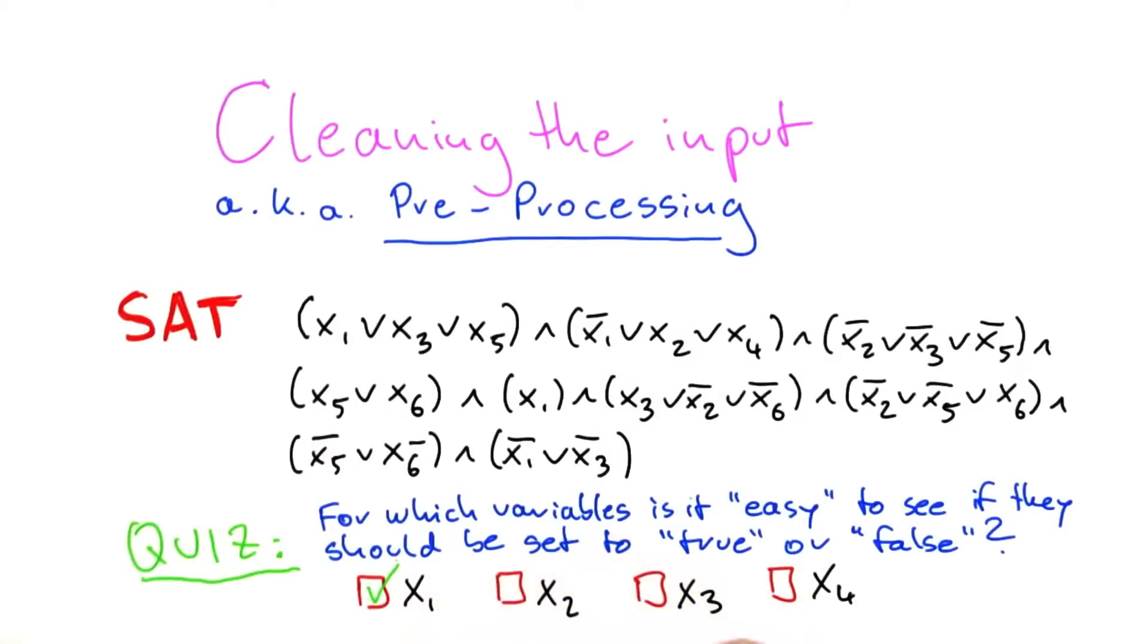As I said, this is a bit subjective. I think for x1, it's very clear that this variable actually has to be set to true. And the reason is the following. If you look at all of the clauses here, they are connected by ands. So if one of these clauses becomes false, the whole Boolean formula is also set to false.